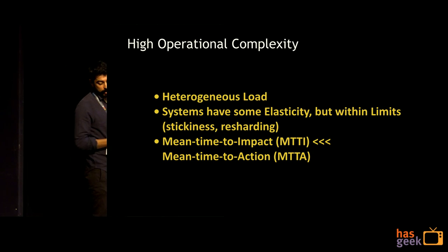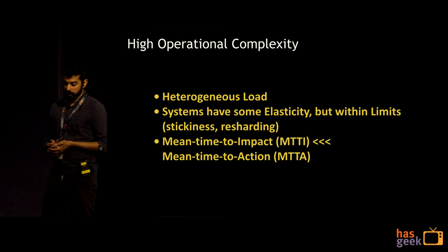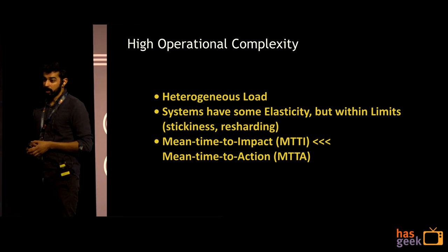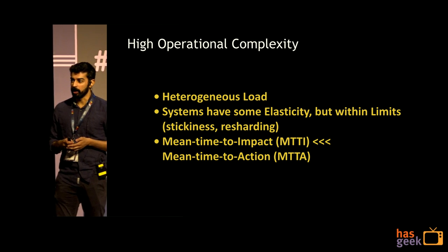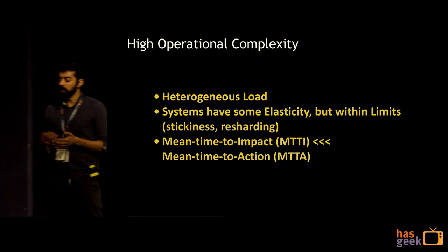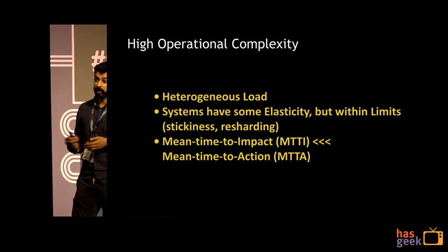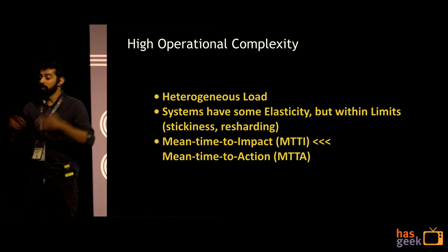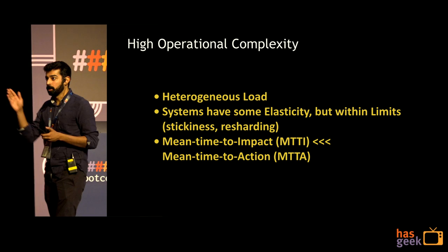These high expectations come coupled with high operating complexity. Real-time systems tend to have very heterogeneous load because of the speed at which data is produced and absorbed — it's easy to go from steady state to peak in a short period. Think about Flipkart's Big Billion sale: users and bots flooding the site compound in terms of data points — logins, checkouts, and various other telemetry — and this can mean you go from steady state to peak load very, very fast.